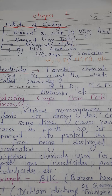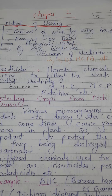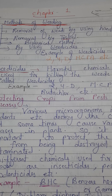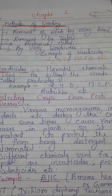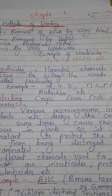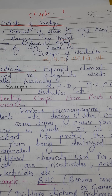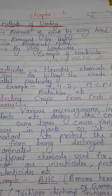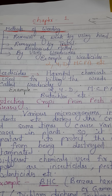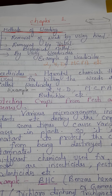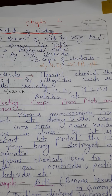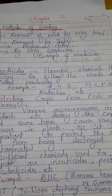As I discussed in the previous video, weeds are unwanted plants which grow along with crop plants. They take nutrients from the soil and compete with crop plants for nutrients, sunlight, air, and water. In this way they hamper the crop plants and affect production. So it is necessary to remove the weeds, and that process is called weeding.